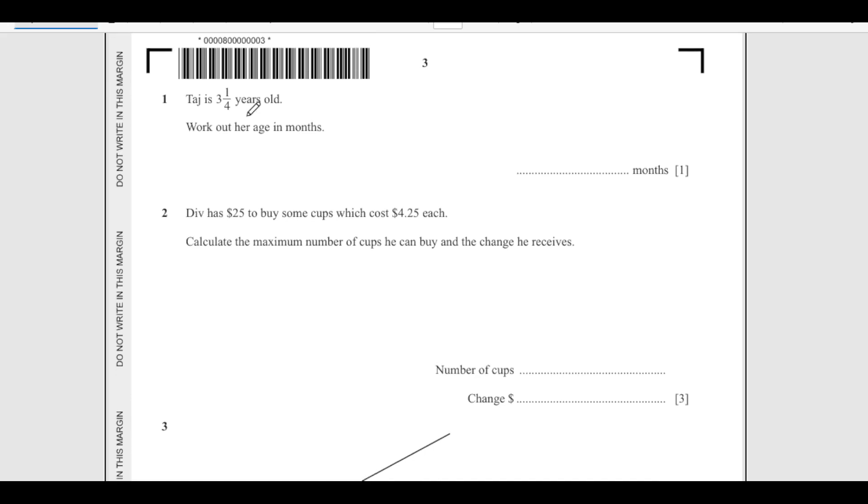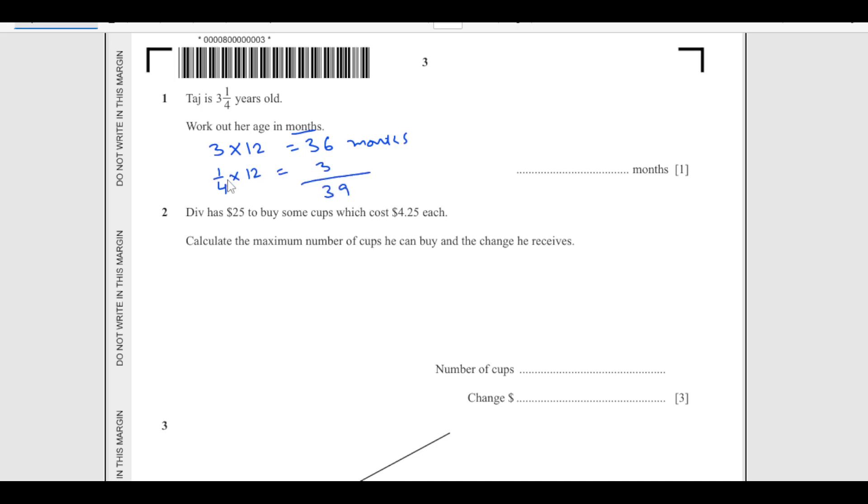Taj is 3 and 1/4 years old. Work out her age in months. So 3 years first of all, we will convert 3 years: 3 times 12 which is 36 months. And then 1/4 of year means 1/4 of 12, that is 3. So total is 39 months.